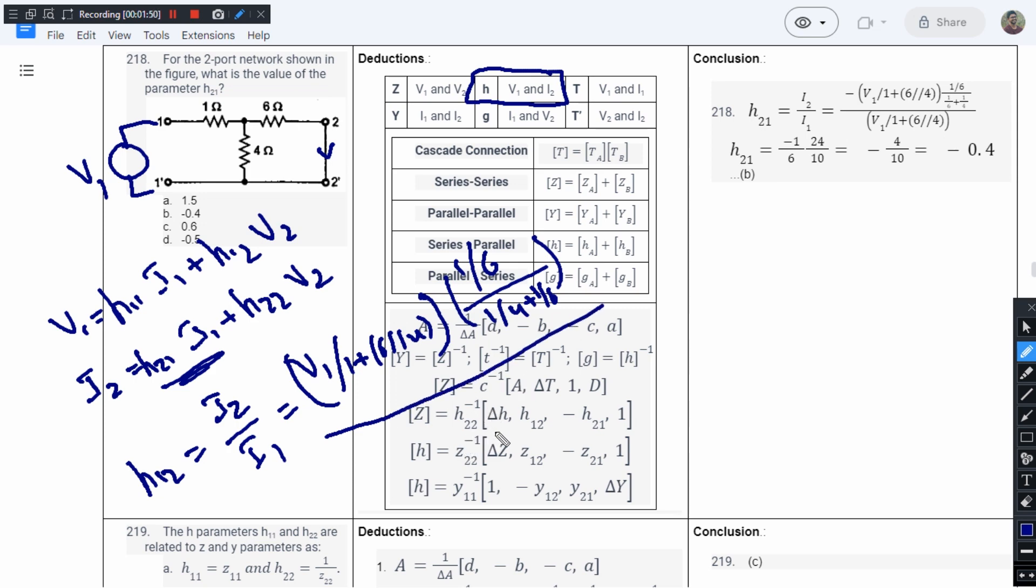Now we will have to find the value of I1. The value of this I1 is the current that is flowing through the source, so it is going to be V1 divided by 1 plus 6 parallel 4. Now because both of them are equal, they will cancel out each other and we will be left with 1 by 6.